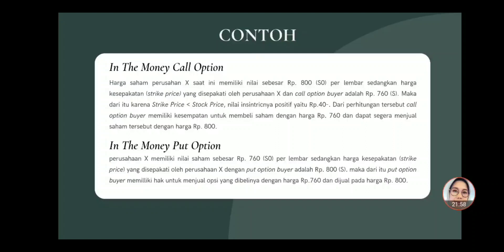In the money put option, contohnya: perusahaan X memiliki nilai sebesar 760 per lembar saham, sedangkan harga kesepakatan atau struck price yang disepakati oleh perusahaan X dengan put option buyer adalah 800. Maka dari itu put option buyer memiliki hak untuk menjual opsi yang dibelinya dengan harga 760 dan dijual pada harga 800.